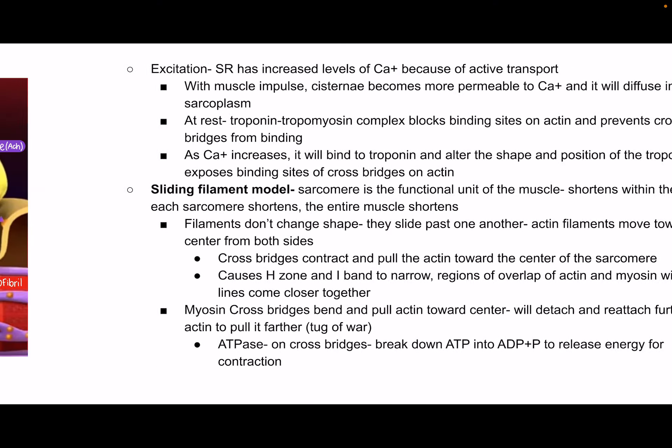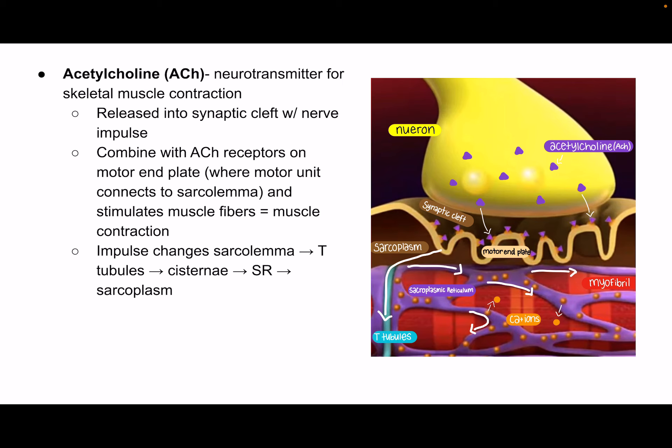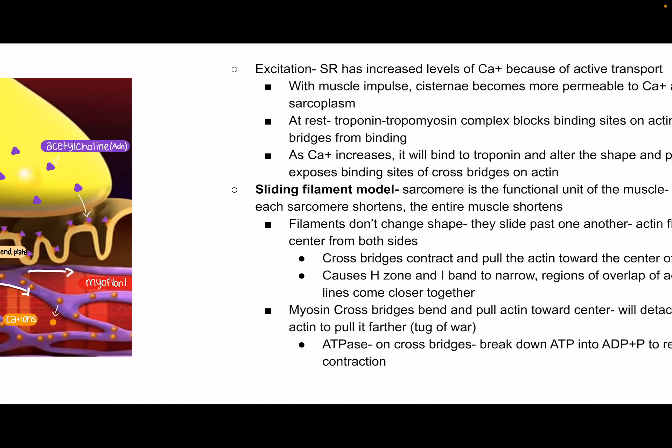We have gone through the anatomy of the muscle cell and the whole muscle from biggest to smallest. Then we talked about myofibrils and myofilaments, talked about the neuromuscular junction and the motor unit. So now let's get into how a muscle contracts. It's called the sliding filament model and we're just going to put everything together that we've talked about up to this point.